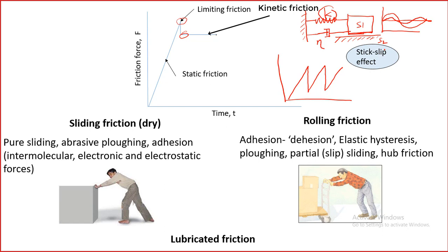Similarly, if we increase k — the stiffness of the machine — then again this amplitude can be reduced further. So by two methods, by changing k and by changing the damping property, we can reduce the effect of stick-slip. Stick-slip will still be there but it can be reduced. And of course the first method is to reduce the value of μs or make it closer to μk. If μs is closer to μk then stick-slip will not occur.